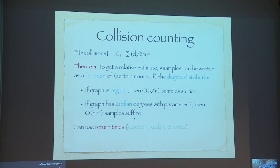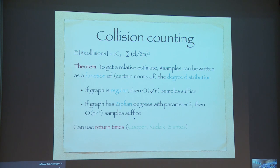You can do a slightly sharper analysis. If the graph is regular, square root of n samples suffice. If the graph has a power law with parameter 2, even fewer samples suffice — n^{1/4} samples actually. So by making more assumptions on the degree distribution, you can get sharper bounds on the number of samples needed to estimate collisions. There was also follow-up work by Cooper et al. who used return times in the random walks to get even better estimates. Instead of using random walks in a black-box manner, if you also estimate the time it takes for a random walk to return to a given node, you can get even better estimates.